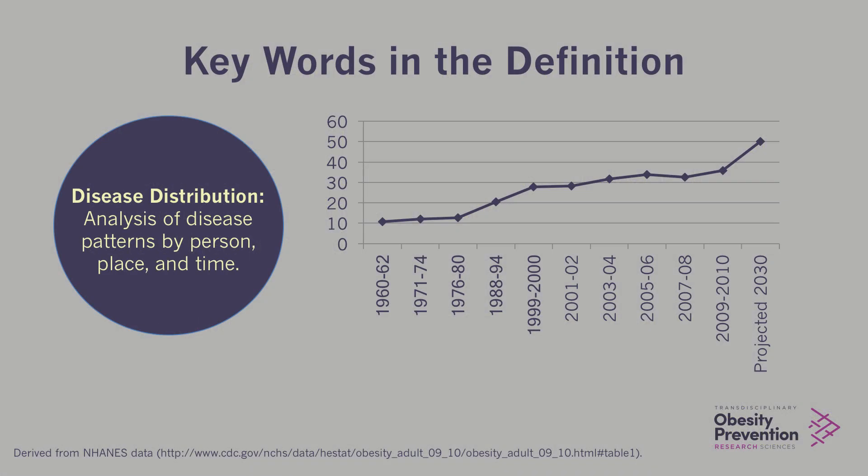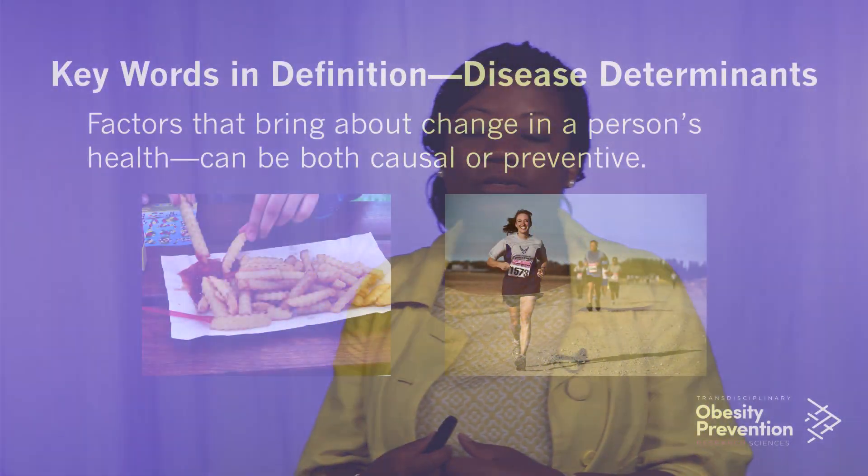First, we talked about disease distribution. What we want to know is what do we understand about the patterns of disease by person, place, and time? Who are the people that are getting the disease? Do we tend to find this particular condition in elderly people or maybe in younger individuals? Do we tend to find a particular condition in an area that is more urban or more rural? And what patterns do we see over time — is the disease increasing or decreasing?